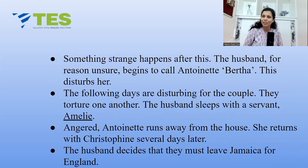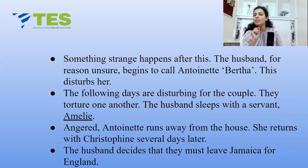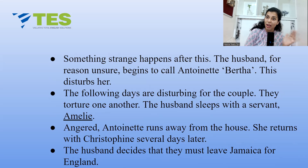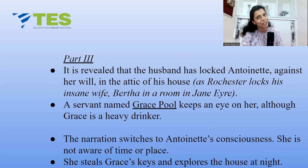Something strange happens: the husband begins to call Antoinette 'Bertha,' which disturbs her greatly. She tells him, 'Don't call me Bertha — that is not my name.' The following days are disturbing; they torture one another. The husband sleeps with a servant named Amélie, and an angered Antoinette runs away from the house. She returns with Christophine several days later. After this, the husband decides they must leave Jamaica and proceed to England, where Part Three begins.